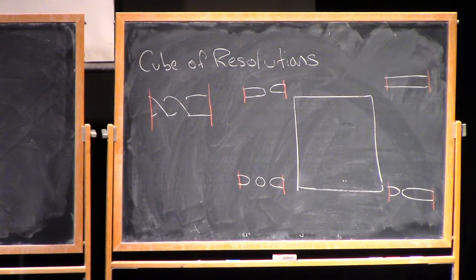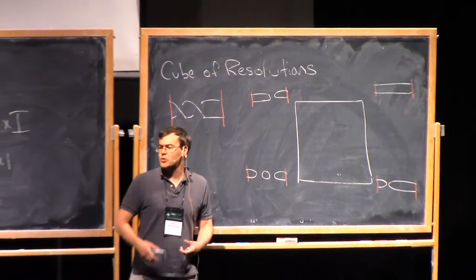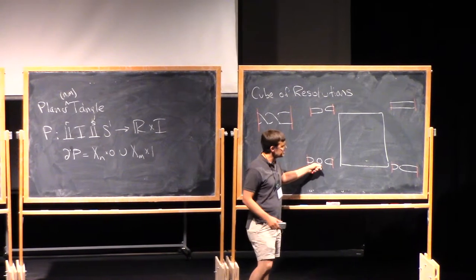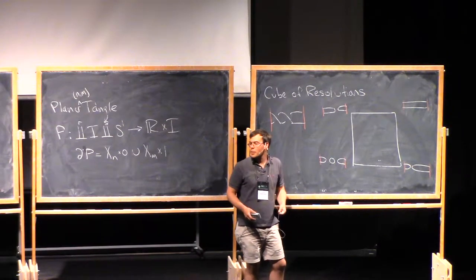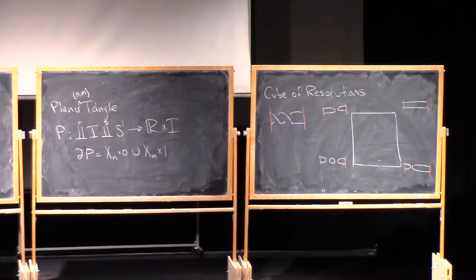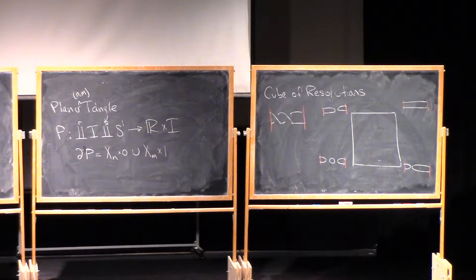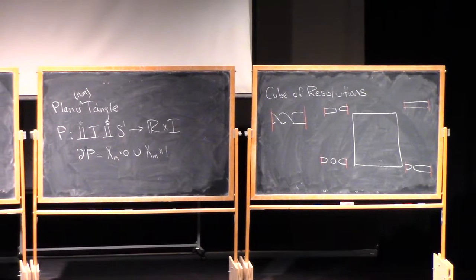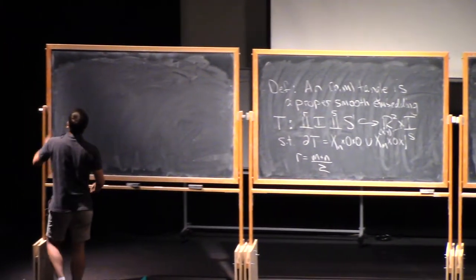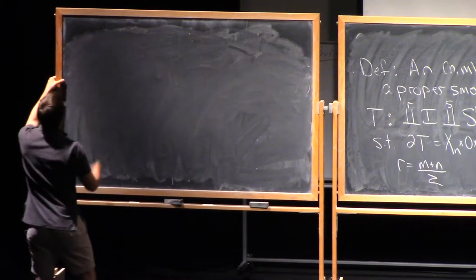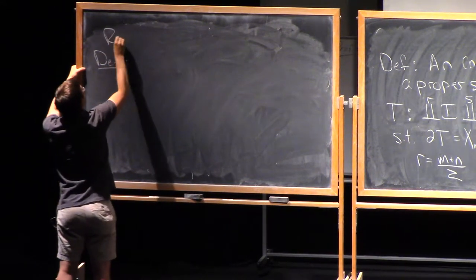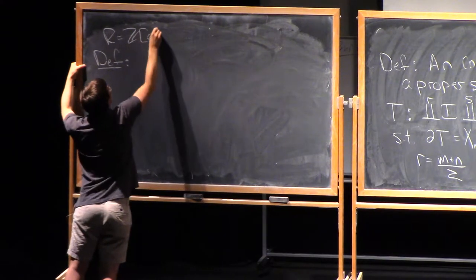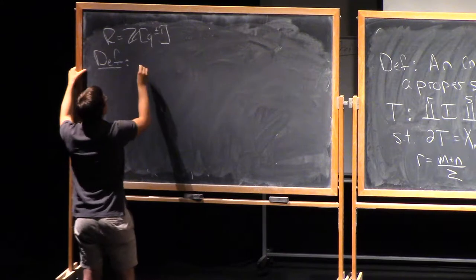So now what I can do — if I think about the Jones polynomial, when I defined it I divided out by the relation where a little circle gave me q plus q inverse. I can still do that here. So let's make a definition. We'll take R to be the ring Z[q^±1]. And we'll define v_{n,m}.